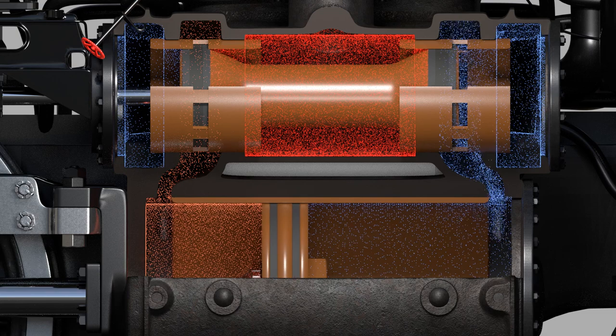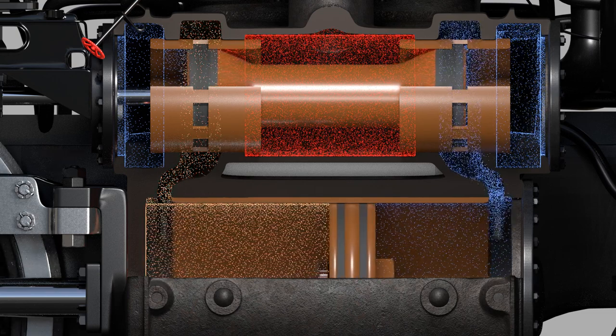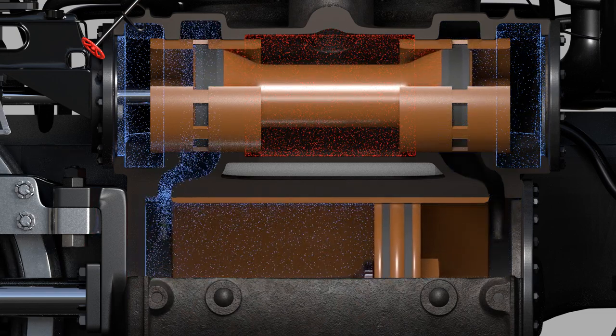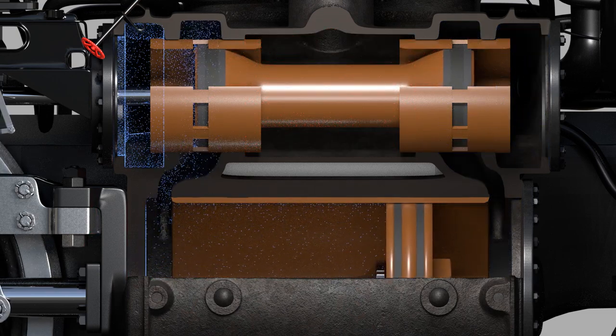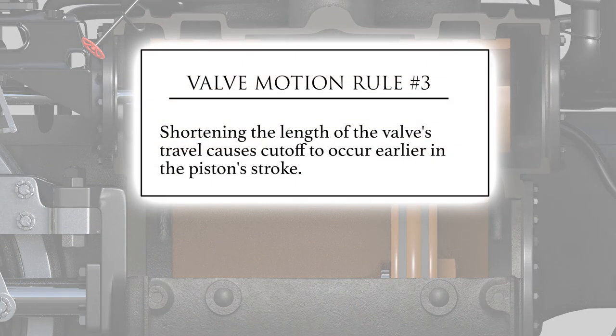As we close the throttle and watch the engine come to a stop, we can summarize these observations of changing the valve cutoff as valve motion rule number three: shortening the length of the valve's travel causes cutoff to occur earlier in the piston's stroke.